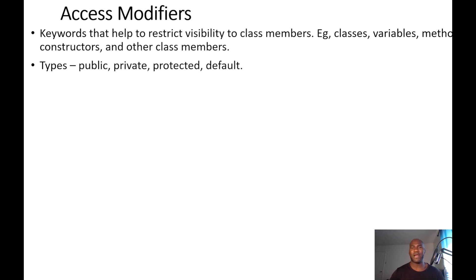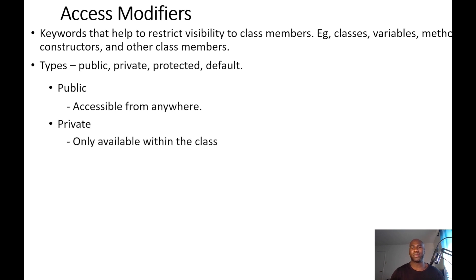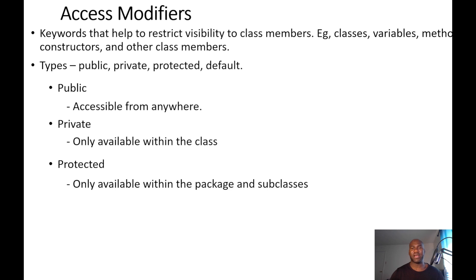We have the Public Access Modifier, the Private, Protected, and Default Access Modifier. The Public Access Modifier means that if you declare a variable with the public keyword, that variable is accessible anywhere within your program. We also have the Private Access Modifier, which restricts visibility of the class member within the class. And we have the Protected Access Modifier — when you declare a variable with the Protected keyword, it means that variable is accessible within the package and the subclass.